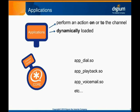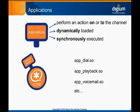Asterisk allows more than one application to be invoked on a single call, but not all at once. Asterisk applications are executed synchronously, one at a time, until the call is hung up. Many applications offer a way to customize their behavior by passing one or more parameters to them when they are invoked from the dial plan. Some applications, like app_dial, even require it. Of course, it makes no sense to tell the system to make a call without specifying the destination.